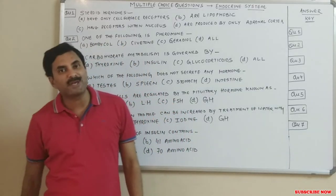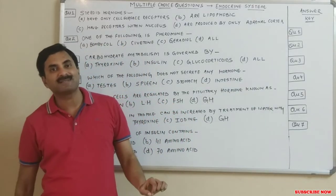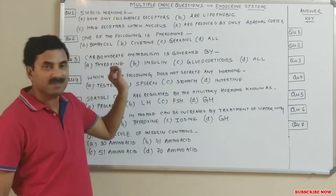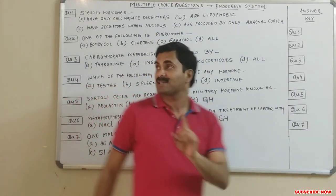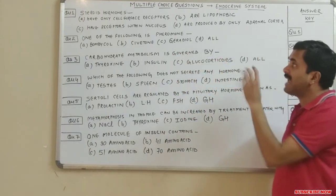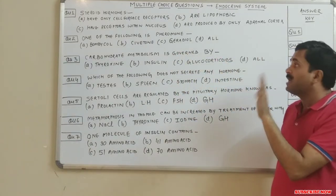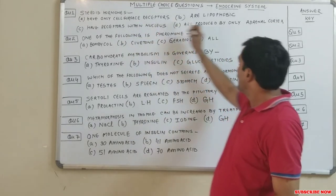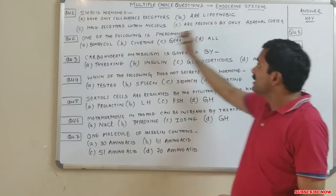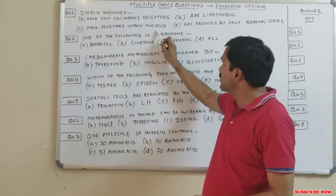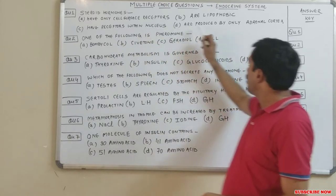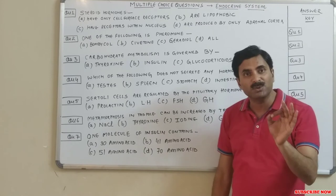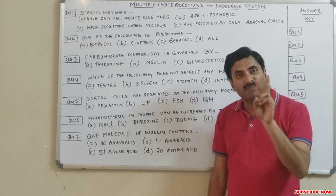Hello to all. Today we will be discussing some MCQs based on the endocrine system. The first question is: steroid hormones — do they have only cell surface receptors, are they lipophobic, do they have receptors within the nucleus, or are they produced only by the adrenal cortex?